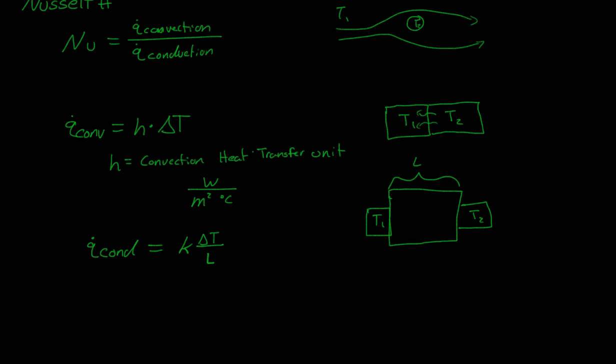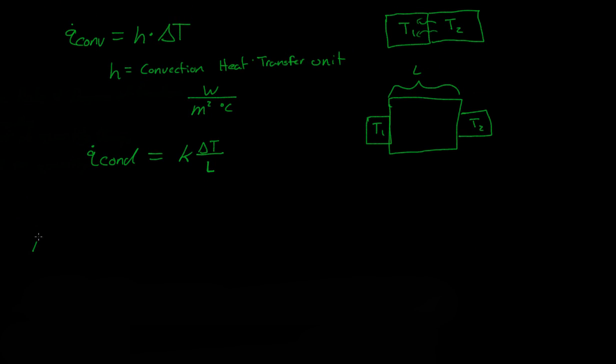We said that the Nusselt number is equal to the Q convection over Q dot conduction. So if we put this in for Q convection, we get H times delta T over K times delta T over L. The delta T's cancel and this flips up. So what we get is the Nusselt number is equal to H times L over K.